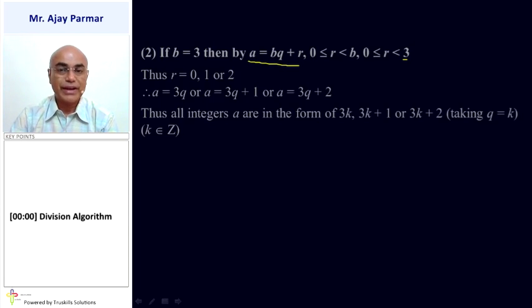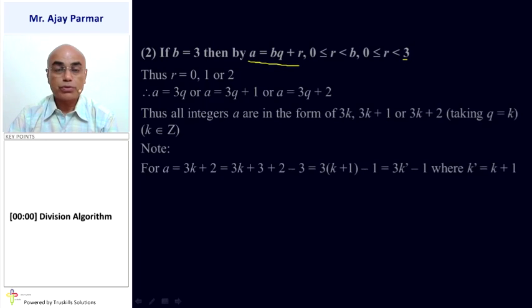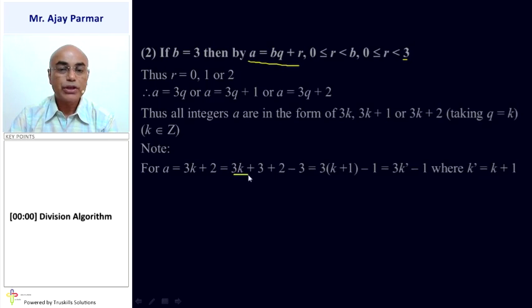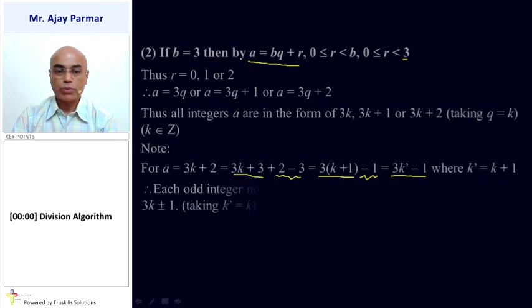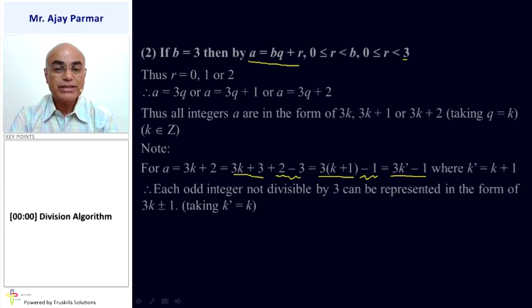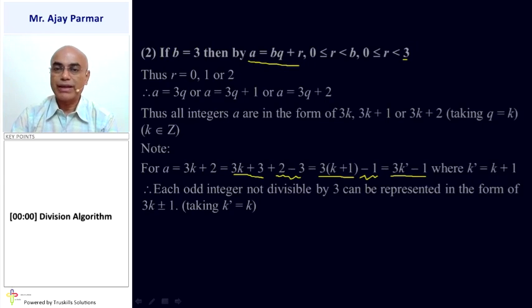Here we have taken Q as K, and K is an integer belonging to Z. Now, A equal to 3K plus 2 can be rewritten as 3K plus 3 plus 2 minus 3 — that is, adding and subtracting 3. This gives us 3 into K plus 1, minus 1. If we take K plus 1 as K-dash, we can represent that as 3K-dash minus 1, where K-dash is K plus 1. That means every odd integer which is not divisible by 3 can be represented in the form of 3K plus 1 or 3K minus 1, that is 3K plus or minus 1.